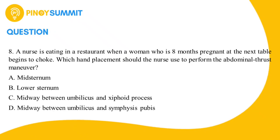Number eight: A nurse is eating in a restaurant when a woman who is eight months pregnant at the next table begins to choke. Which hand placement should the nurse use to perform the abdominal thrust maneuver? A) Mid sternum, B) Lower sternum, C) Midway between umbilicus and xiphoid process, D) Midway between umbilicus and symphysis pubis.